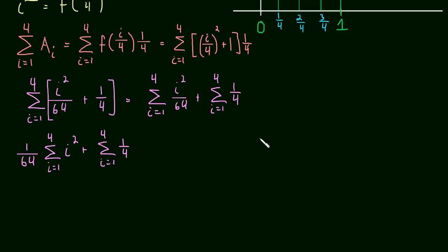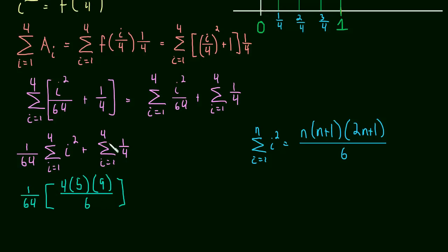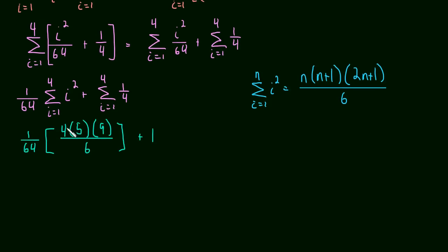We can simplify by pulling that one over 64 out as a scalar multiple. So this is one over 64 times the sum as i goes from one to four of i squared, plus the sum as i goes from one to four of one-fourth. The sum of i squared from one to n equals n times (n+1) times (2n+1) over six — a formula you'll want to know for test time. With n equal to four, that's four times five times nine over six.